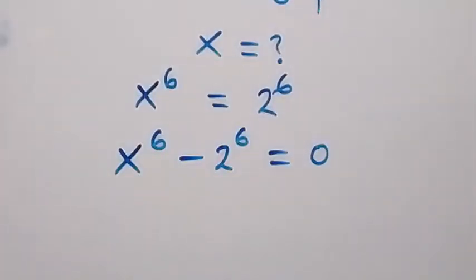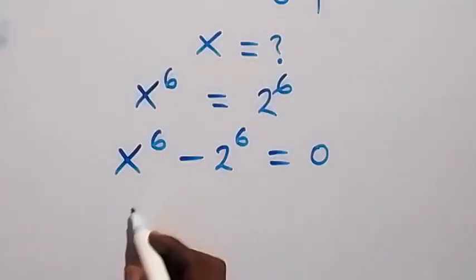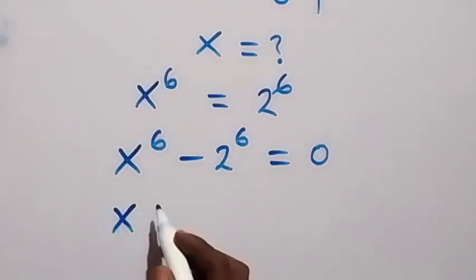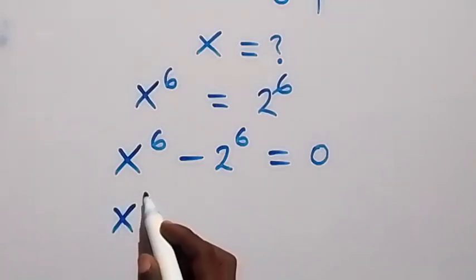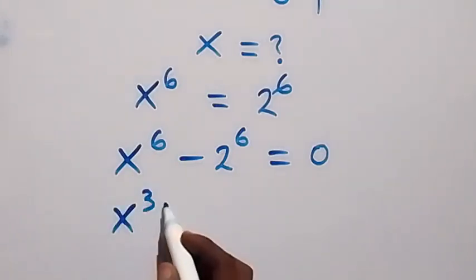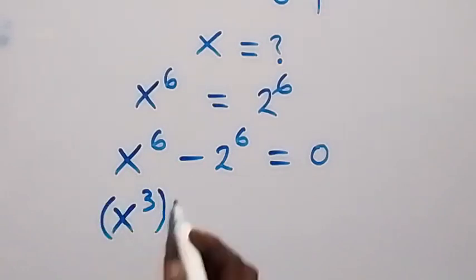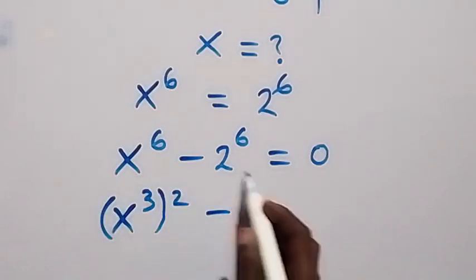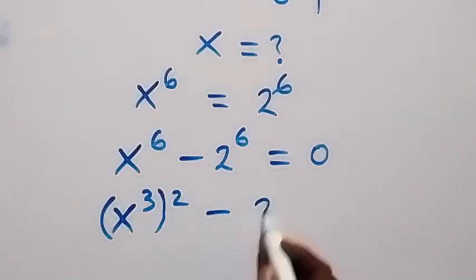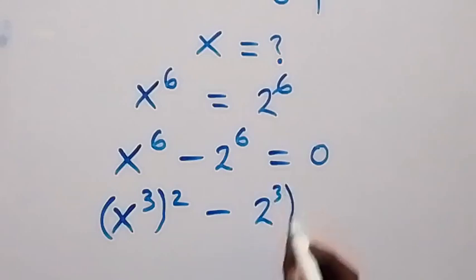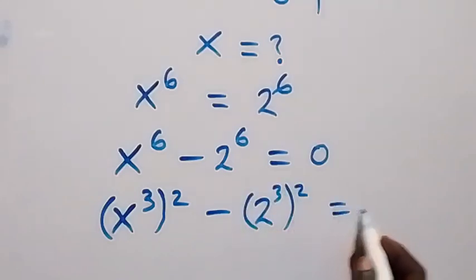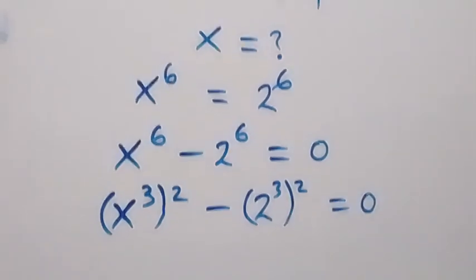Then here we can rewrite 6 as 3 times 2, so we have x raised to power 3 then raised to power 2, and also 2 raised to power 3 then raised to power 2, which equals to 0.